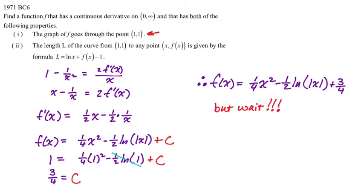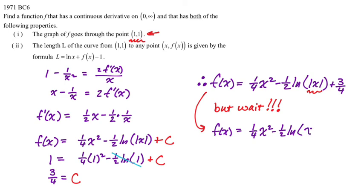There's also the domain consideration. The function as written has a domain of all x except 0, which is not continuous on an open interval containing the initial condition. Since we need to go through the point (1, 1), we drop the absolute value. Dropping the absolute value around x in the natural log changes the domain from all reals except 0 to just all reals greater than 0 — that is, zero to infinity — which is the required domain. So the final answer is f of x equals one-fourth x squared minus one-half natural log of x plus three-fourths.